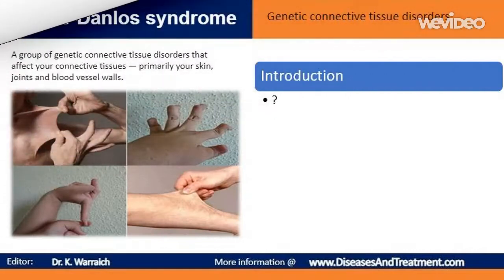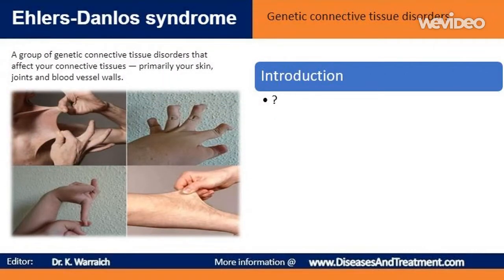Ehlers-Danlos syndromes are a group of genetic connective tissue disorders that affect your connective tissues, primarily your skin, joints, and blood vessel walls. These can be noticed at birth or in early childhood.